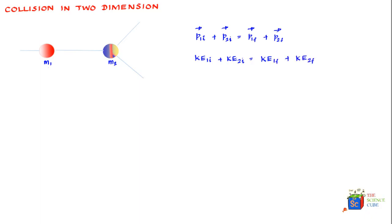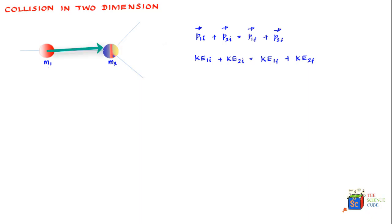Let's understand what exactly we mean by two-dimensional motion here. If mass m1 were to hit mass m2 head on, it hits right in the center so they continue to move in a straight line. But if you play carom board or billiards, you know that if m1 hits m2 at an offset, m1 would go in one direction and m2 in another, making it two-dimensional motion in x and y coordinates.